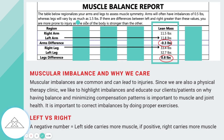Here we can look at the muscular imbalance again. This isn't a comparison to last time — this is just where you're currently at. A negative number means the left side is bigger and a positive number means the right side is bigger. We just want to try to level off imbalances over time in the right and left parts of the body.